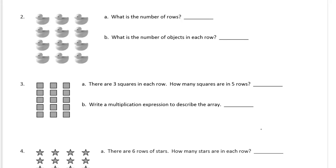So now we're looking at rubber duckies. What's the number of rows? There's, going across, one, two, three — there's four rows there. And what are the number of objects in each row? There's one, two, three ducks in each row. So that's four rows of three.